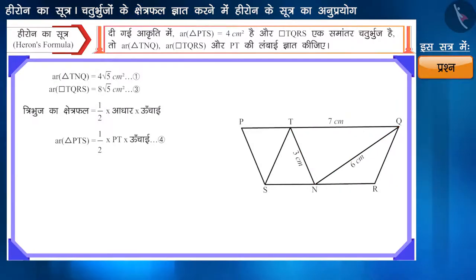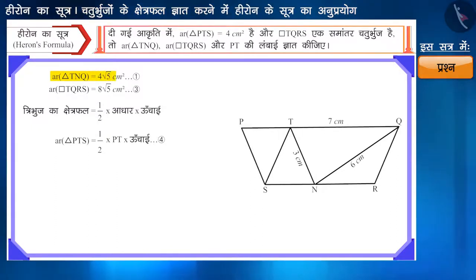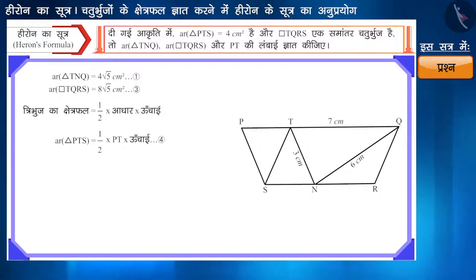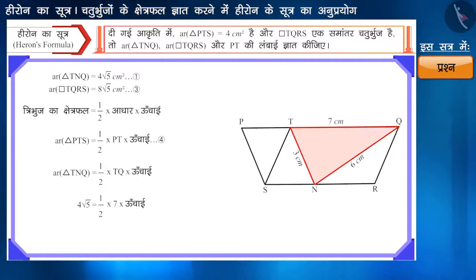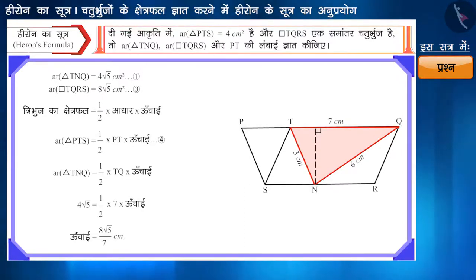हमने त्रिभुज TNQ का क्षेत्रफल 4√5 वर्ग सेंटीमीटर प्राप्त किया है। हम सूत्र में इनके मान प्रतिस्थापित कर इस त्रिभुज की ऊँचाई ज्ञात कर सकते हैं। हमें इसकी ऊँचाई 8√5/7 सेंटीमीटर प्राप्त होगी।